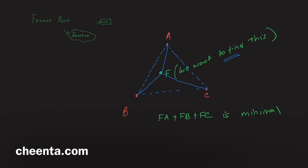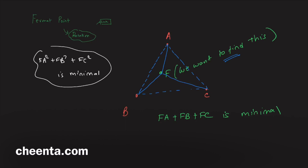Here is a question for you to think about: can you find a point F such that FA² plus FB² plus FC² is minimal? Can you find a point like that inside triangle ABC? Think about it — it's a fun problem. You can put your answer in the comment section.